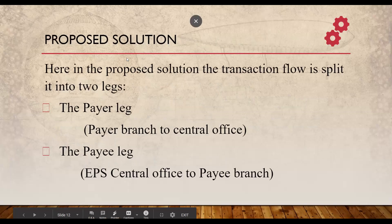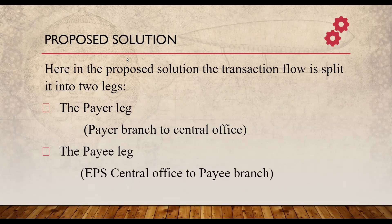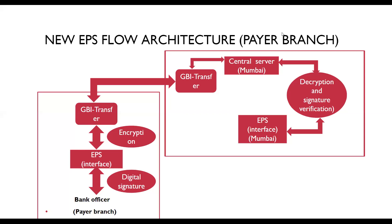What is the proposed solution? The transaction flow is split into two parts: payer leg and payee leg. The payer leg covers the flow of transaction from the payer branch to the central office, and the payee leg covers the flow from the central office to the payee branch. Since providing cryptographic functionality requires the use of cryptographic toolkits, it is assumed that we will use a cryptographic authority infrastructure and PKI — Public Key Infrastructure — for offering security. Transactions will be digitally signed, encrypted, and decrypted at the payer and payee branches as well as the EPS central office. Signing operations can be performed on external hardware with smart cards.